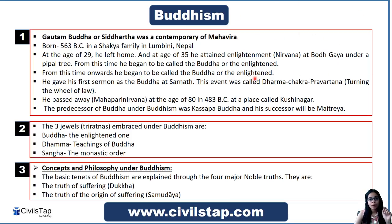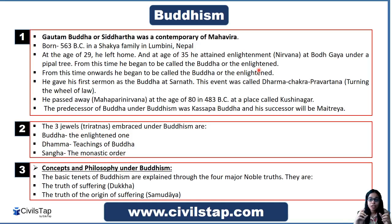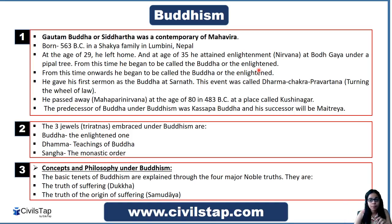When he achieved enlightenment, we call it Nirvana. Nirvana means that one is freed from all desires, because Gautam Buddha believed that desires are the root cause of sorrow. If we are free from desires, all sorrows will be finished — and that state is called enlightenment, i.e., Nirvana. This is a key word you have to focus on.